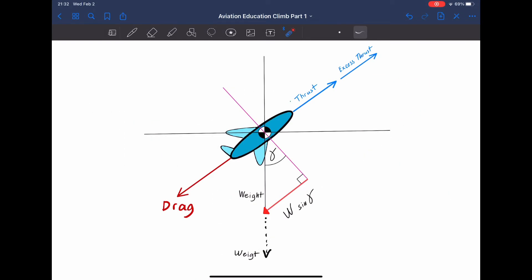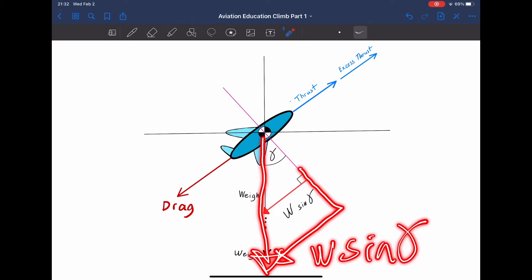There are a couple of factors that affect the climb gradient. Obviously, it is weight. As the weight increases, your weight apparent drag also increases. You guys can visually see that the second red line that I drew is longer than the first one, right?